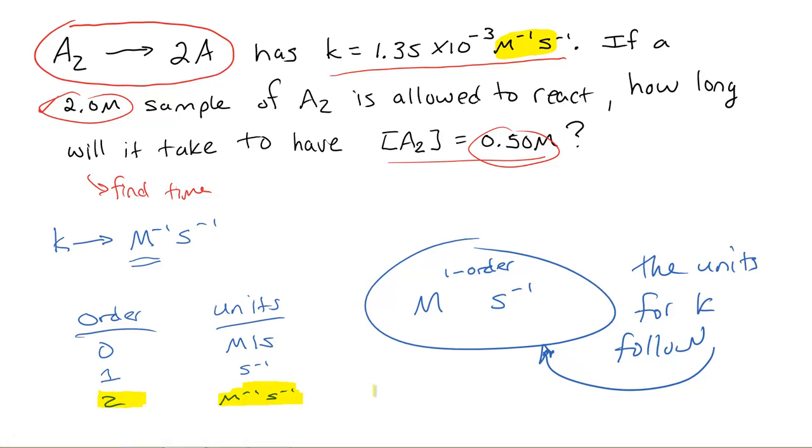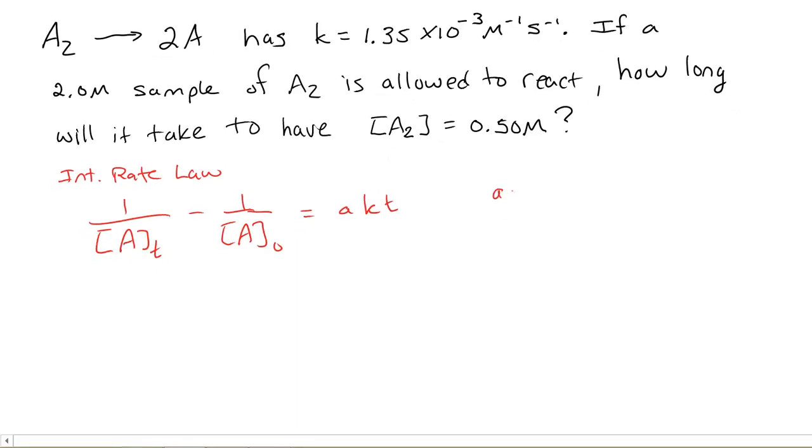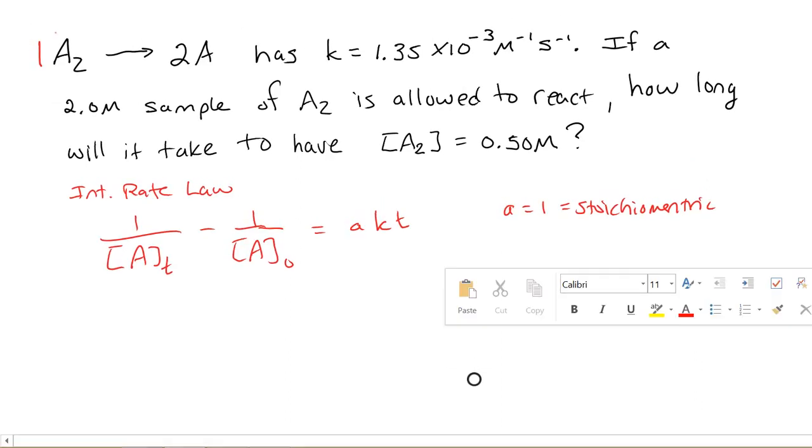And that means I know which integrated rate law to use now. So what we're going to do then is I'm going to erase all this now that we know it's second order and actually solve this properly. Okay, so we have a second order reaction. The integrated rate law for second order is 1 over the concentration at any particular time minus 1 over the concentration that we started with is equal to a times kt.